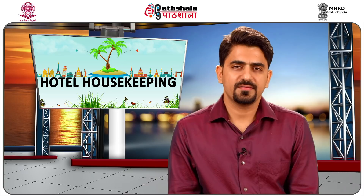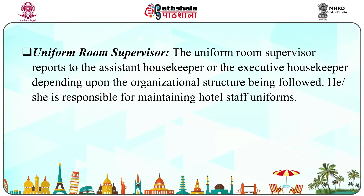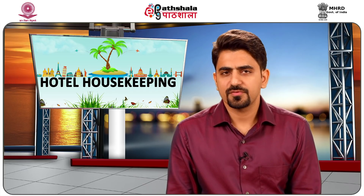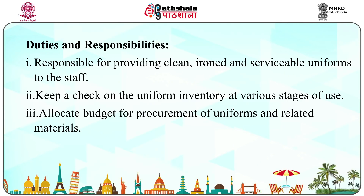Next is the uniform room supervisor. The uniform room supervisor reports to the assistant housekeeper, executive housekeeper, or may even report to the laundry manager. He or she is responsible for maintenance of hotel staff uniforms, and thus all duties and responsibilities are related to uniforms. They are responsible for providing clean, ironed and serviceable uniforms to the staff, keeping a check on the uniform inventory at various stages of its usage, and allocating budget for procurement of uniforms and related materials.